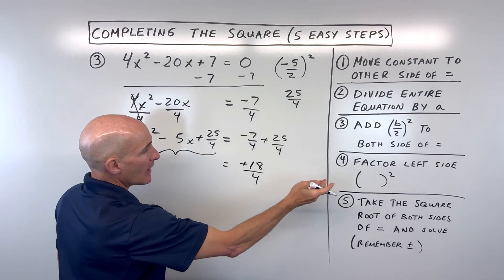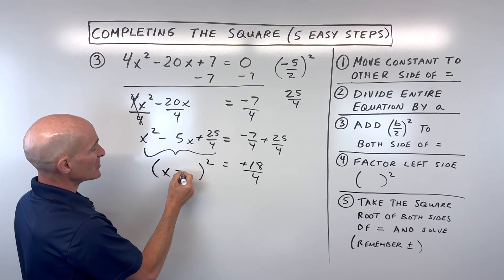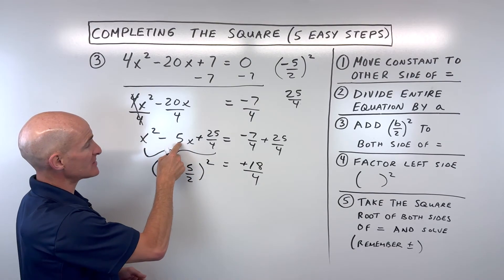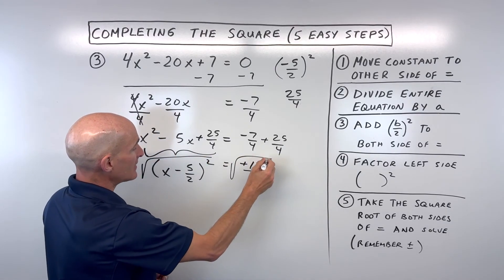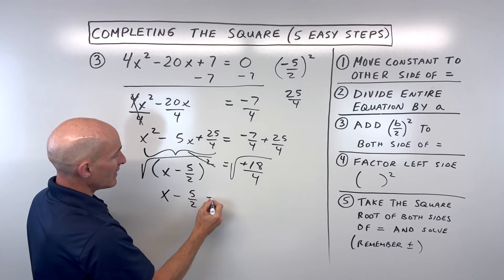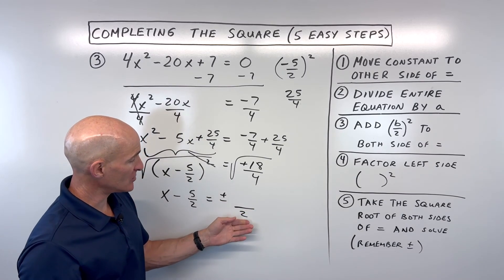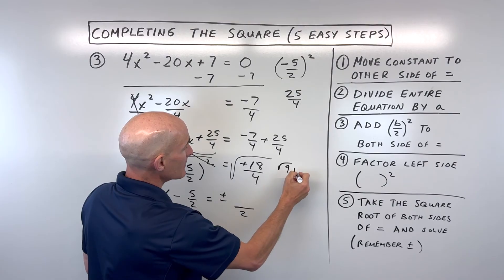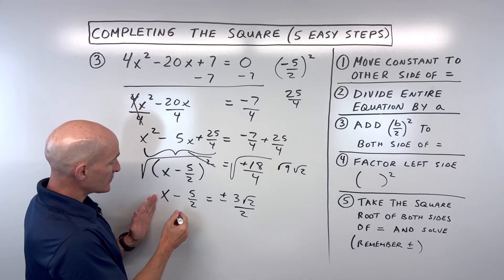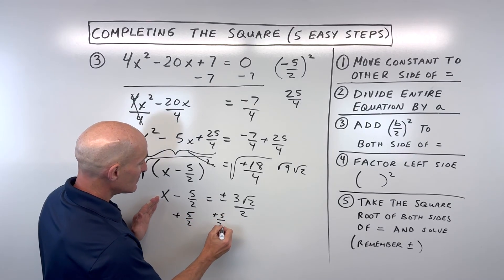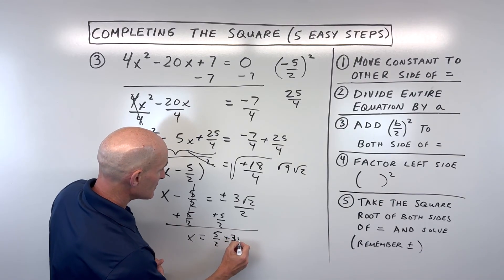Now factor the left side as a binomial squared — it's always half of the b value, so it's x minus 5 over 2, the quantity squared, equals 18 over 4. Now take the square root of both sides. Square and square root undo each other. We get plus or minus — square root of 4 in the denominator is 2, and the square root of 18 simplifies as 18 equals 9 times 2, so that's 3 root 2 over 2. Last step: add 5 halves to both sides to get x by itself. So x equals 5 halves plus or minus 3 root 2 over 2.